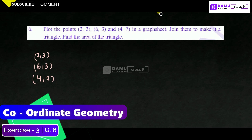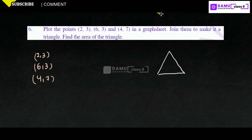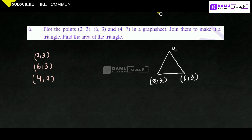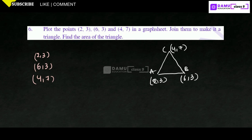We are going to draw a rough triangle with these points. Take (2,3) here, (6,3) here, and (4,7) here. So this is the triangle ABC. We are going to draw the graph on the graph sheet, and a rough diagram is given.